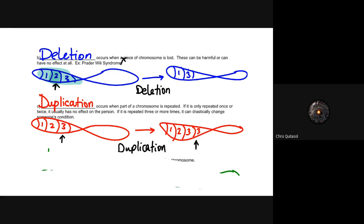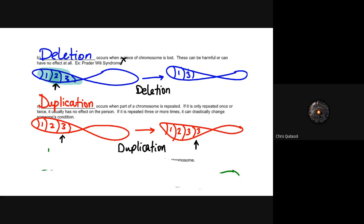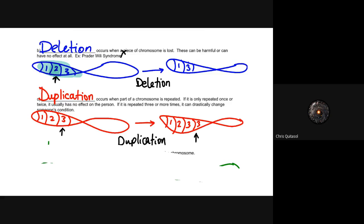Duplication is when one or more of the parts of the chromosome is repeated. It can be repeated once or twice, and it usually has no effect on the person. If it's repeated more than three times, it can drastically change the condition that that person is in. It can drastically change their expressive traits. In this example, we have the chunk of chromosome information 3. Again, it's a string of nucleotides, it's genes, it's not just one nucleotide. It's a large chunk of genetic information. It's copied and then duplicated back into that chromosome. So we have two expressions of that gene sequence or that chunk of information.